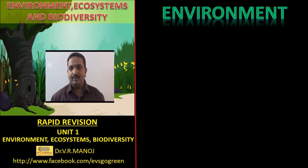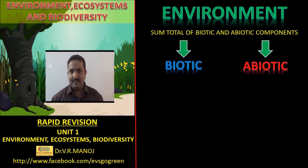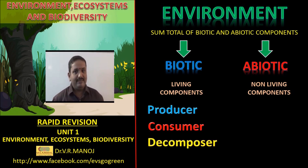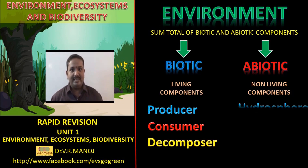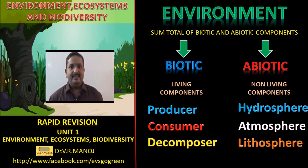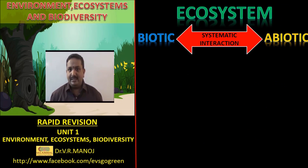Environment is the sum total of biotic and abiotic components. Biotic can be divided into producer, consumer, and decomposer. Abiotic can be divided into the hydrosphere, atmosphere, and lithosphere.